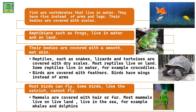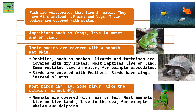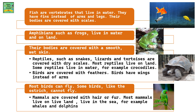Amphibians such as frogs live in water and on land. Their bodies are covered with a smooth, wet skin. Reptiles such as snakes, lizards and tortoises are covered with dry scales. Most reptiles live on land, though some reptiles live in water — for example, crocodiles.